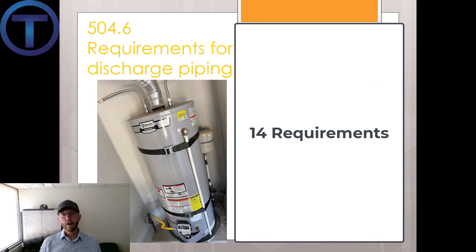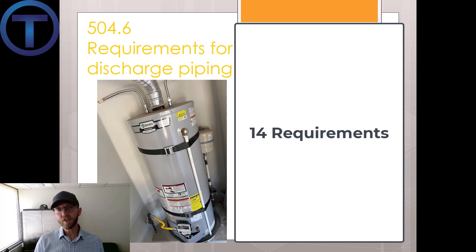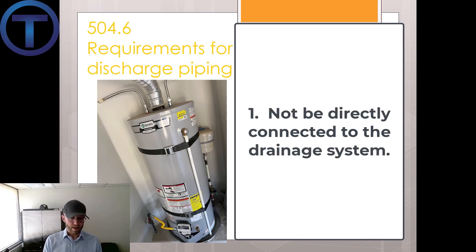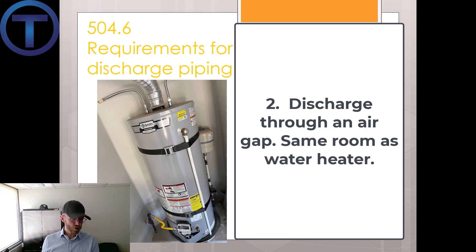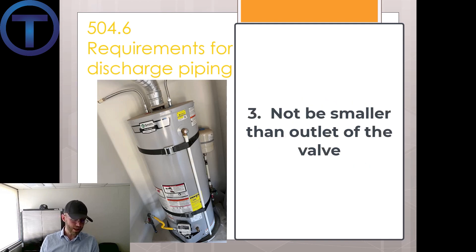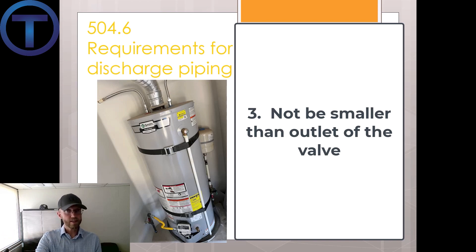Coming from the temperature pressure relief valve is a discharge pipe, and 504.6 gives us 14 important points about the installation of this discharge pipe. Number one: it's not to be directly connected to the drainage system — this is an indirect waste. Number two: discharge through an air gap. Number three: not smaller than the diameter of the outlet of the valve served — three-quarter inch typically has to stay three-quarter inch all the way down.